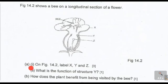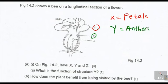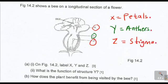Let us look at question 1A: on figure 14.2, label X, Y, and Z. So it's carrying three marks. X right here, these are called the petals. Then we also have structure Y — these are called the anthers. Then we also have structure Z, which is called the stigma.